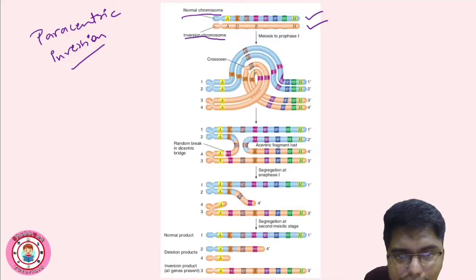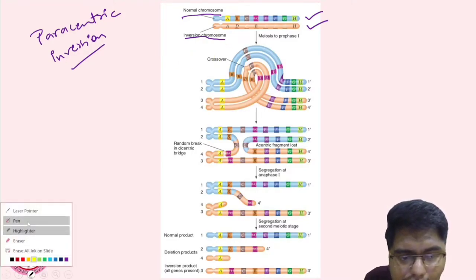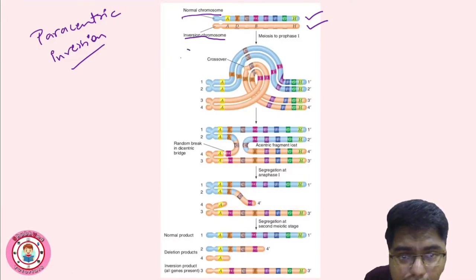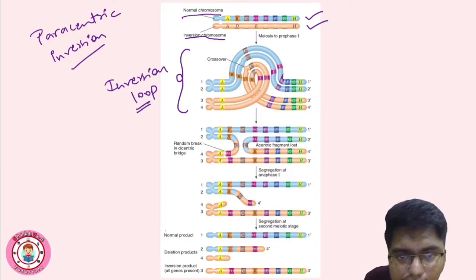In meiosis, during prophase one, a crossover occurs. This is known as an inversion loop — the chromosomes form an inversion loop in order to pair up homologous segments. After this, there is recombination.